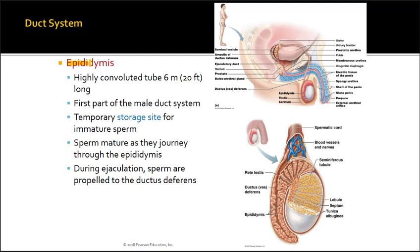The epididymis is a convoluted tube and is the first part of the ductal system. It is considered a temporary storage site for immature sperm. Sperm reside in this region and migrate through the rest of the epididymis, maturing along their pathway. During ejaculation, sperm moves through the ductus deferens and out of the urethra, with fluid added along the way.